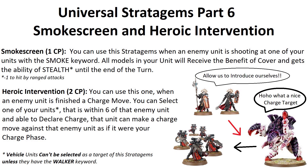Heroic Intervention costs two command points. Use it in your opponent's charge phase after an enemy unit ends a charge move — select one of your units within 6 inches and it can attempt a charge against that unit. If successful, you get to fight first in your opponent's fight phase, which is very strong. However, you cannot select vehicle units for Heroic Intervention unless they have the walker keyword — such as dreadnoughts or dev dreads.